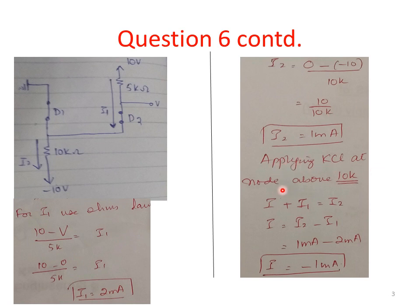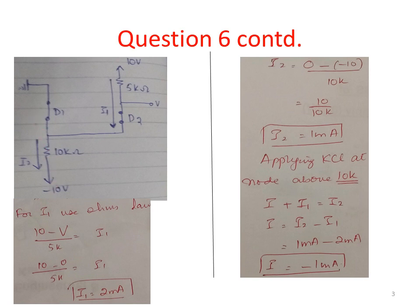I will be applying KCL at the node above the 10K resistor — I should have named this node A, B, C, X or Y. The direction of current I and current I1 are both toward the node, so I give them the same sign in the KCL equation. The direction of I2 is away from the node, so I placed I2 on the other side. Putting in the values of I1 and I2, the value of I comes out to be minus 1 milliampere.